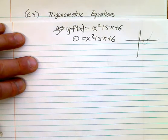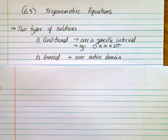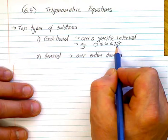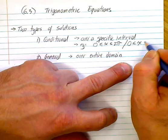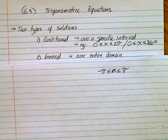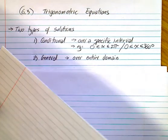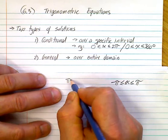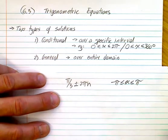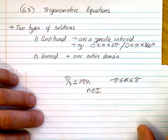There are two types of solutions. First, we have conditional solutions — these are over a specific interval, for example 0 to 2π, or 0 to 360 degrees, or sometimes negative π to π. Make sure you identify all solutions within that interval. For solutions over the entire domain, we write something like π/3 plus 2πn. In the back of the book you'll see plus or minus 2πn, but since n is an integer it can be positive or negative, so you don't actually need the plus or minus.